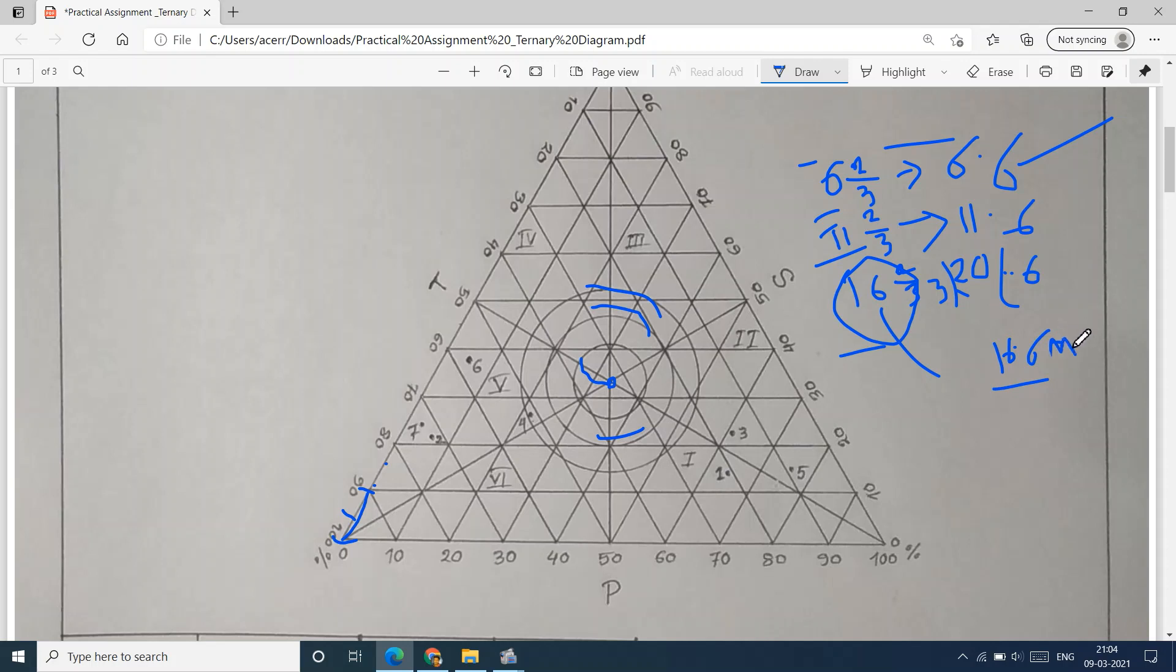Here, one centimeter (10 millimeters) represents 10 percent. So the unit is millimeters. After taking these measures - 6.6 millimeters, 11.6 millimeters, and 16.6 millimeters - in your compass, you will draw these circles from this center.